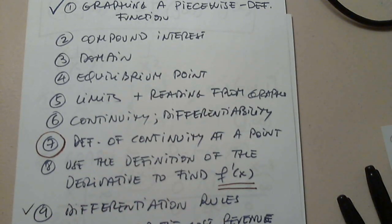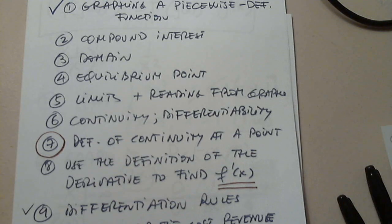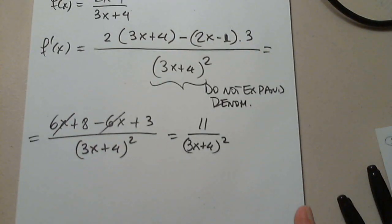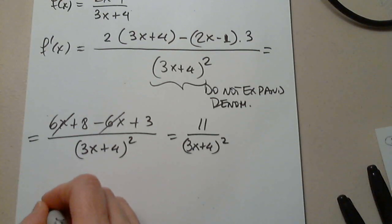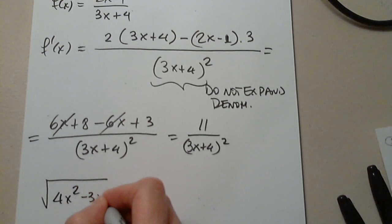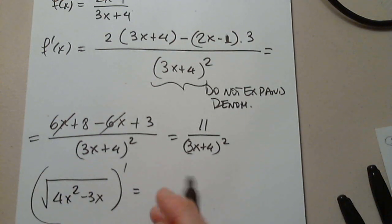Okay, so let's also talk about one more example, and then you can choose anything. So let's say we have the square root of 4x squared minus 3x, and we're asked to find a derivative.